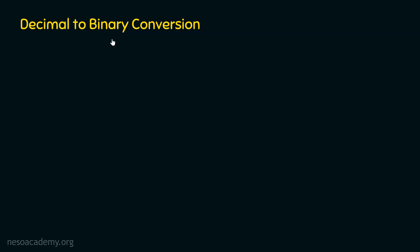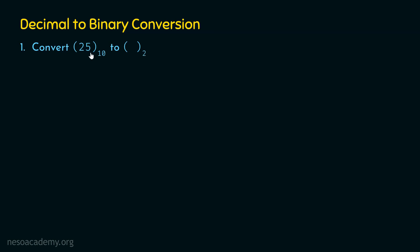Instead of going through a lot of theory, I will give you one example. With the help of this example, we will try to understand how to convert a decimal number to a binary number. Here, we need to convert the decimal number 25 to an equivalent binary number. This is a decimal number because the base here is 10. As I have already told you, the decimal number system has base 10.